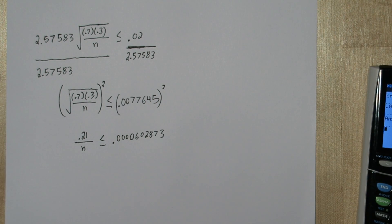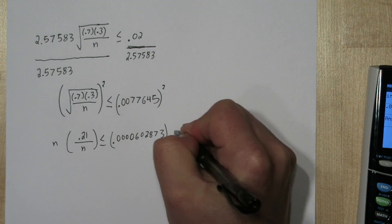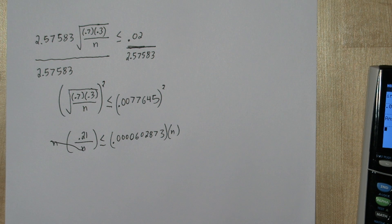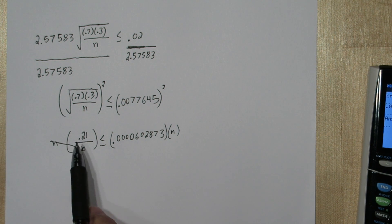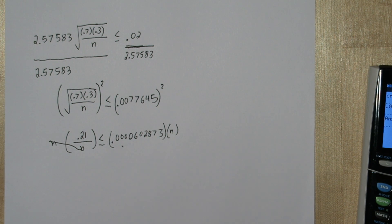Now to isolate n, we'll multiply both sides by n first. So these n's cancel out, and we get 0.21 equals this times n. So if we divide 0.21 by this quantity, we'll have n.